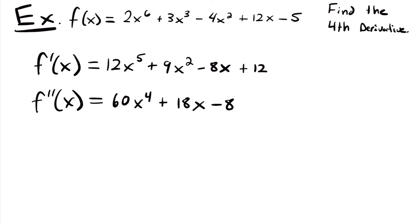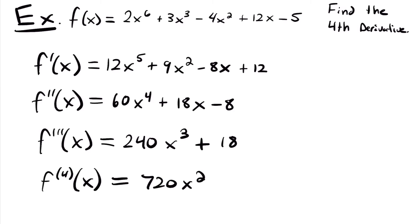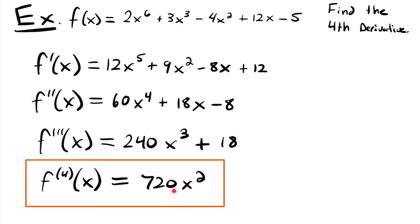Now let's find the third derivative. f triple prime of x: 4 times 60 is 240x³. The derivative of 18x is just 18, and the derivative of −8 is 0. So f triple prime of x = 240x³ + 18. Now we take one more derivative to find the fourth derivative: 3 times 240 is 720x², and the derivative of 18 is 0. So our final answer is that the fourth derivative is equal to 720x².